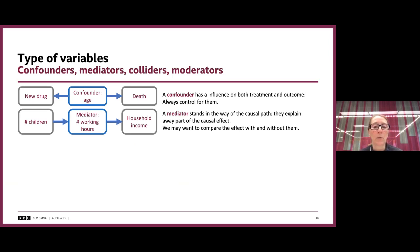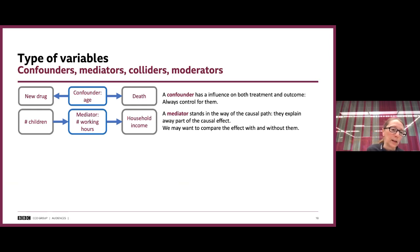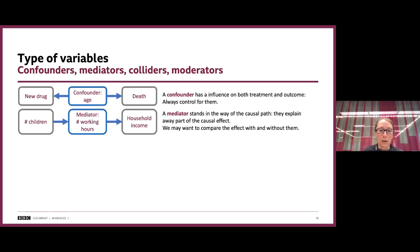The second type of variable is the mediator — something that stands in the causal path. The mediator explains away part of the causal effect. Depending on what you want to do, you may or may not want to include it in your equations, and it might be valuable to compare models with and without it. For example, the number of children in your household can affect household income via the mediator of number of hours you can work.